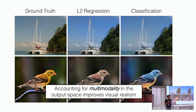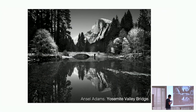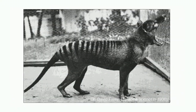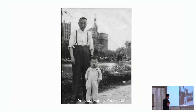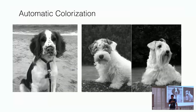I ran this system on some legacy black-and-white photos. Here's an image by Ansel Adams of Yosemite Valley Bridge and our colorization result. Here's an image of a thylacine — an animal that went extinct in the 1930s with no known color photos, even though every few years someone claims to see one in the wild. And this is an amateur family photo of my father and my great-grandfather in 1950s China. Some of these are fun, but we also see some failures.